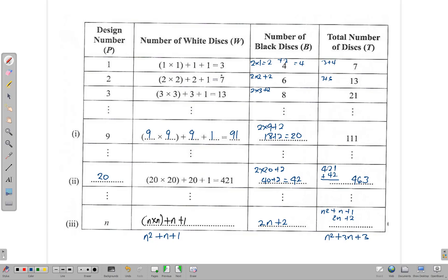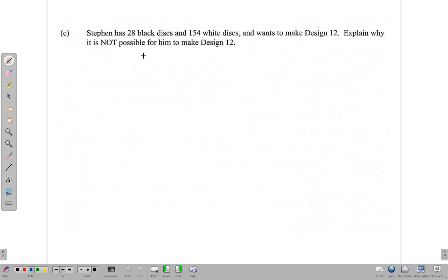Now there's one more part that says Stephen has 28 black discs and 154 white discs and wants to make design 12. Explain why it's not possible for him to make design 12. So if he has 154 white plus 28 black and his total number of discs here is 8 plus 4. That's 125, so 7 and 18. So he has 182 discs.